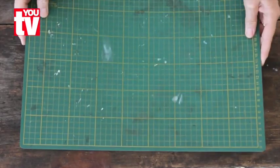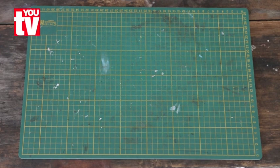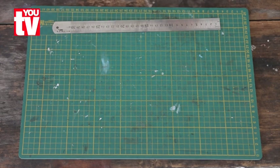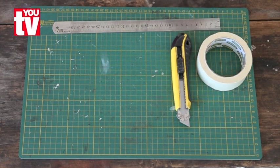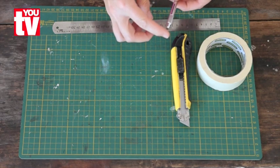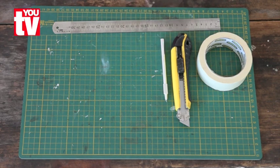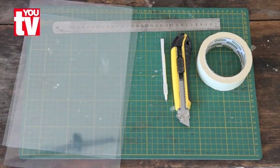You will need a cutting mat, a steel ruler, masking tape, a craft knife, another smaller craft knife with a swivel blade, transparency paper and your designs.